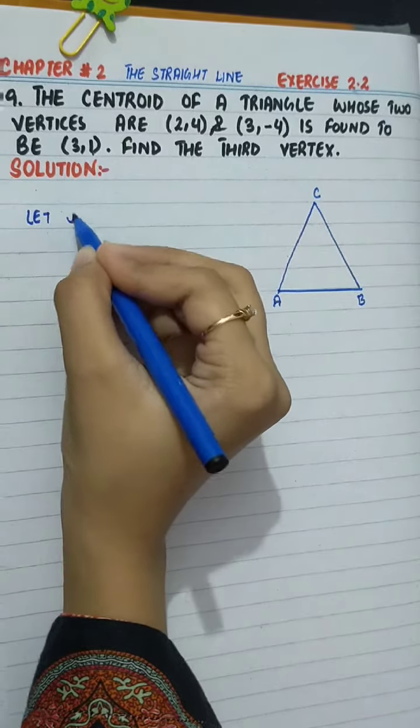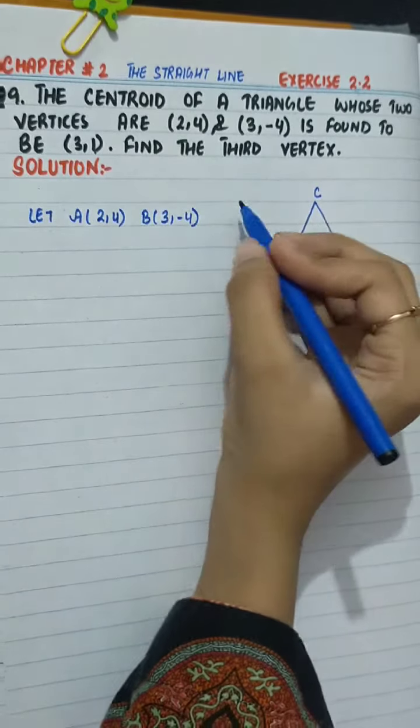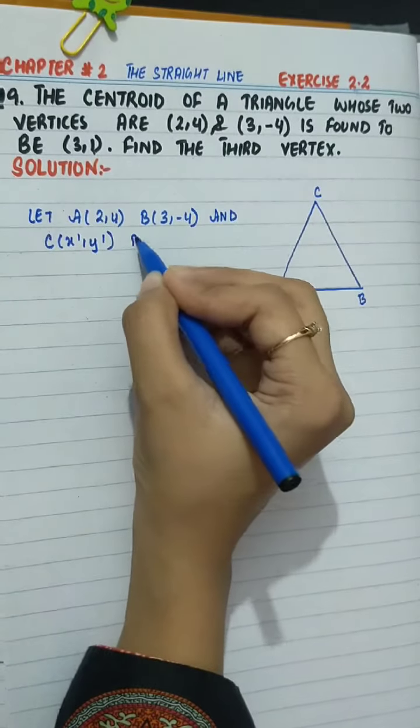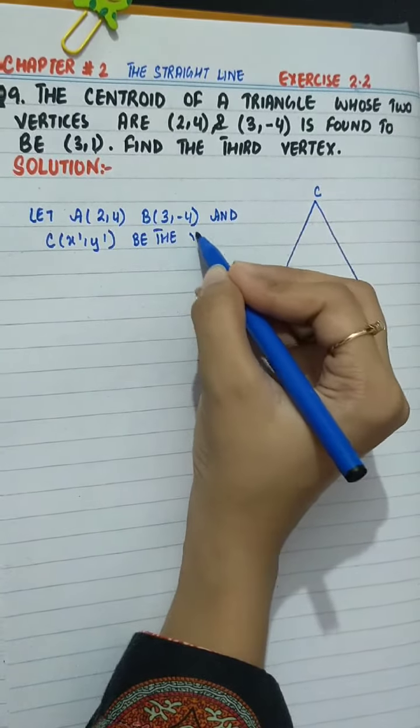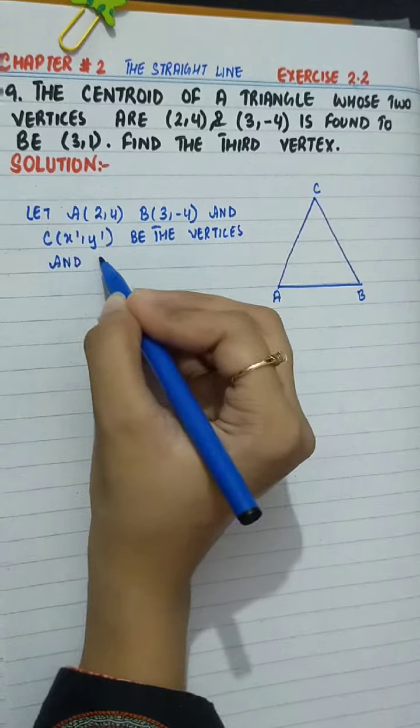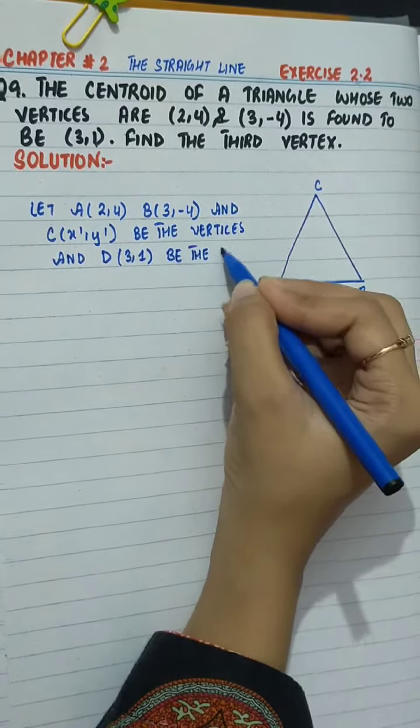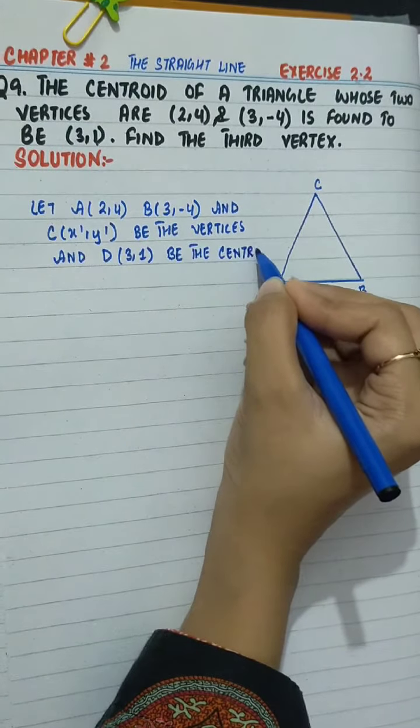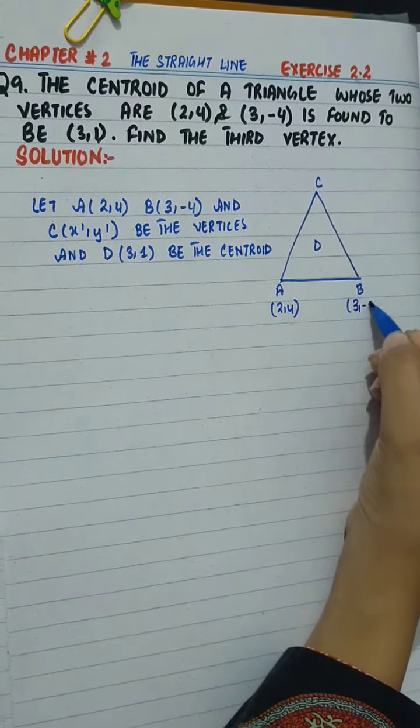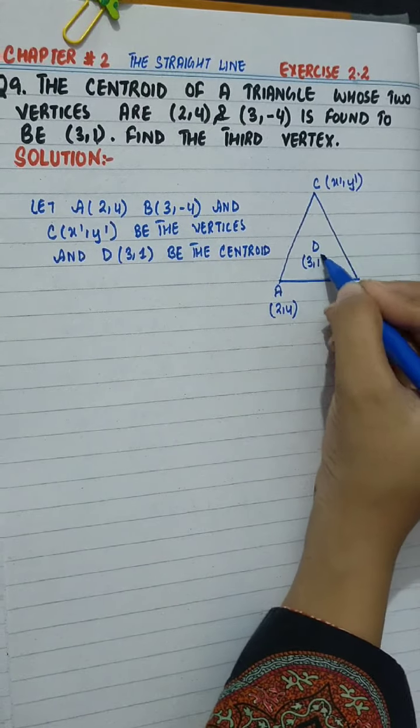Let A(2,4), B(3,-4), and C(x',y') be the vertices and D(3,1) be the centroid. So A is (2,4), B is (3,-4), C is (x',y'), and D is (3,1).